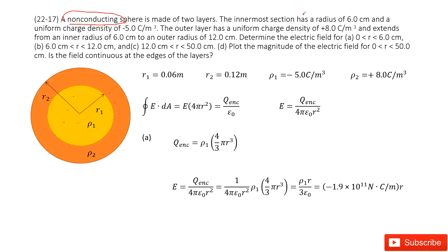It tells you there are two layers. The first layer has radius R1 = 6 cm. R2 is 12 cm. The charge density for the inner part, rho1, is negative 5 coulombs per meter cubed. Rho2 is positive 8 coulombs per meter cubed. These are the given quantities.